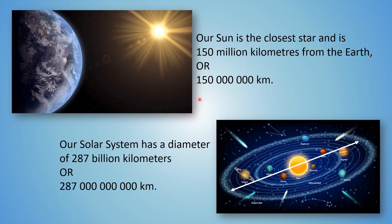If we look at distances in the universe between planets and stars, our sun is the closest star to the Earth and it's about 150 million kilometers away. Written out as a number, that's 150 with six zeros. If we look at the diameter of the solar system, it's about 287 billion kilometers from one side to the other — that's 287 with nine zeros. These numbers are really large and really difficult to work with.